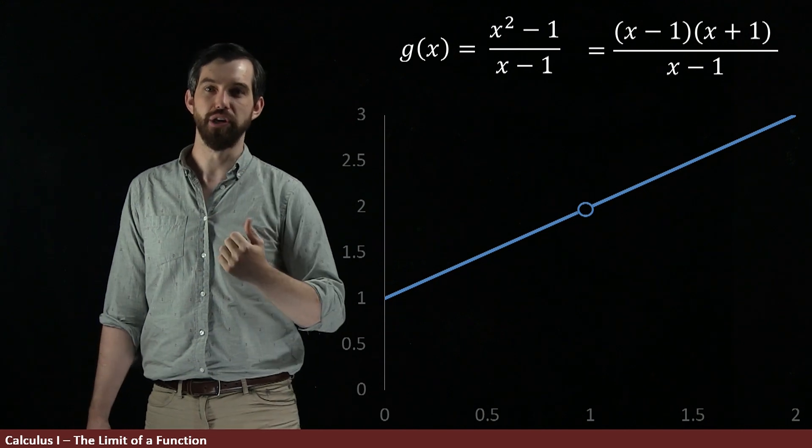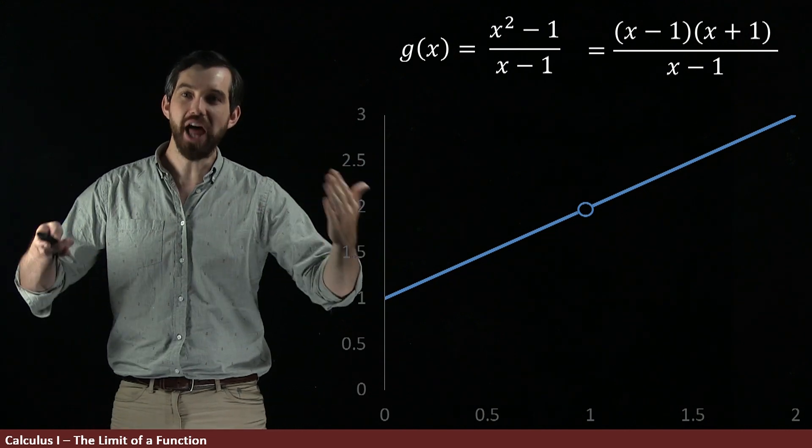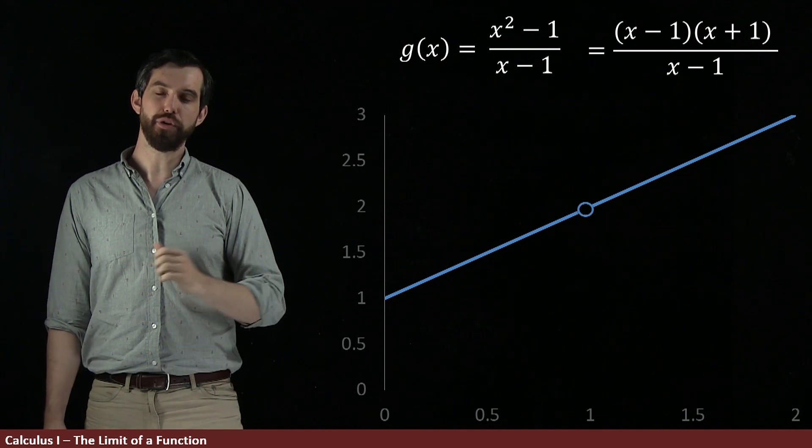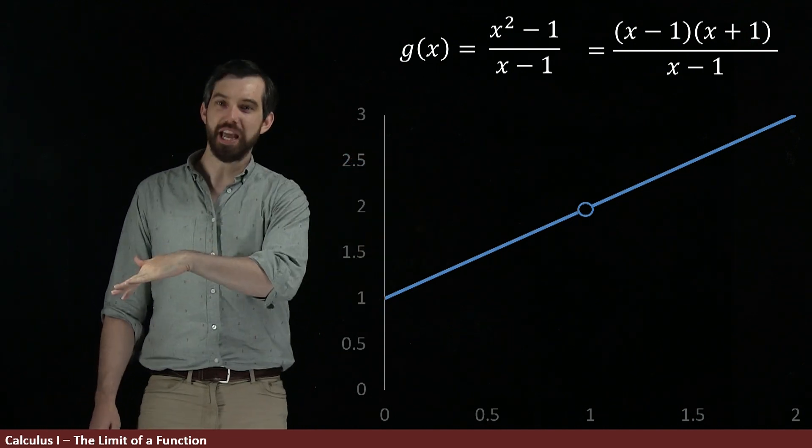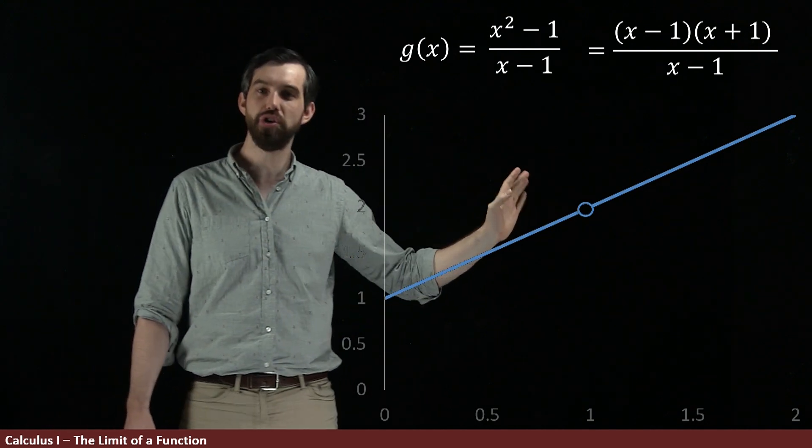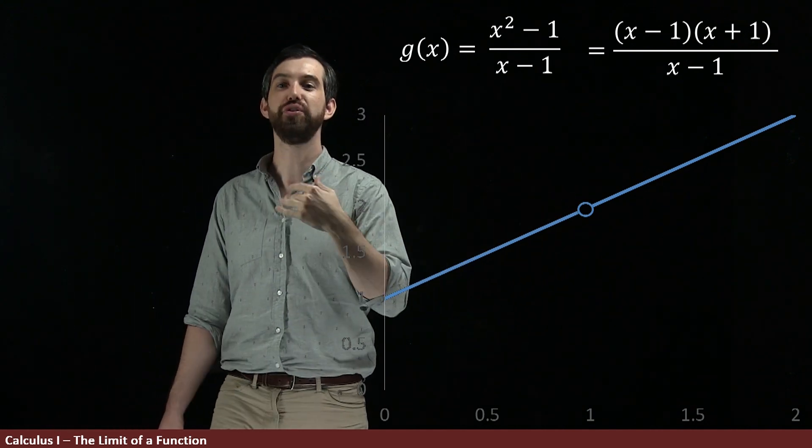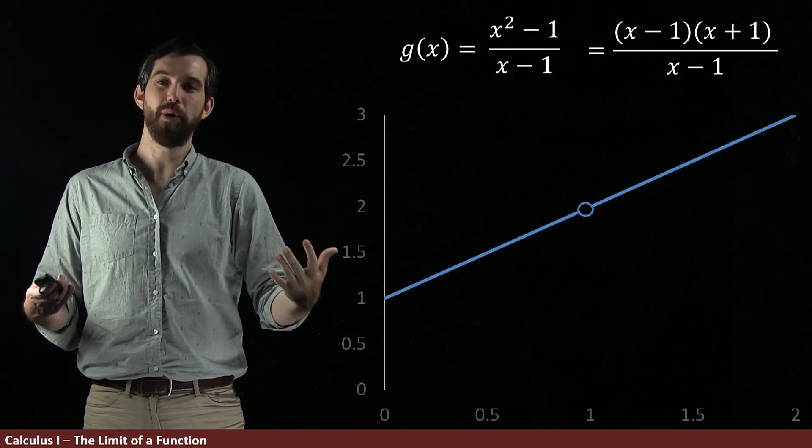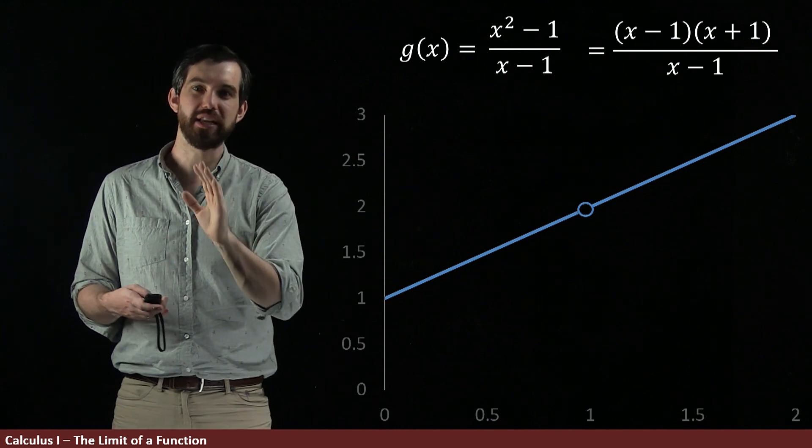There's just no value. g of 1 is undefined because you have this weird problem. So, the graph is almost the same as the graph for f of x. It's still the same straight line, but with the difference that this is not defined at that one point. And so, the domain, the allowable input values, are very slightly different.